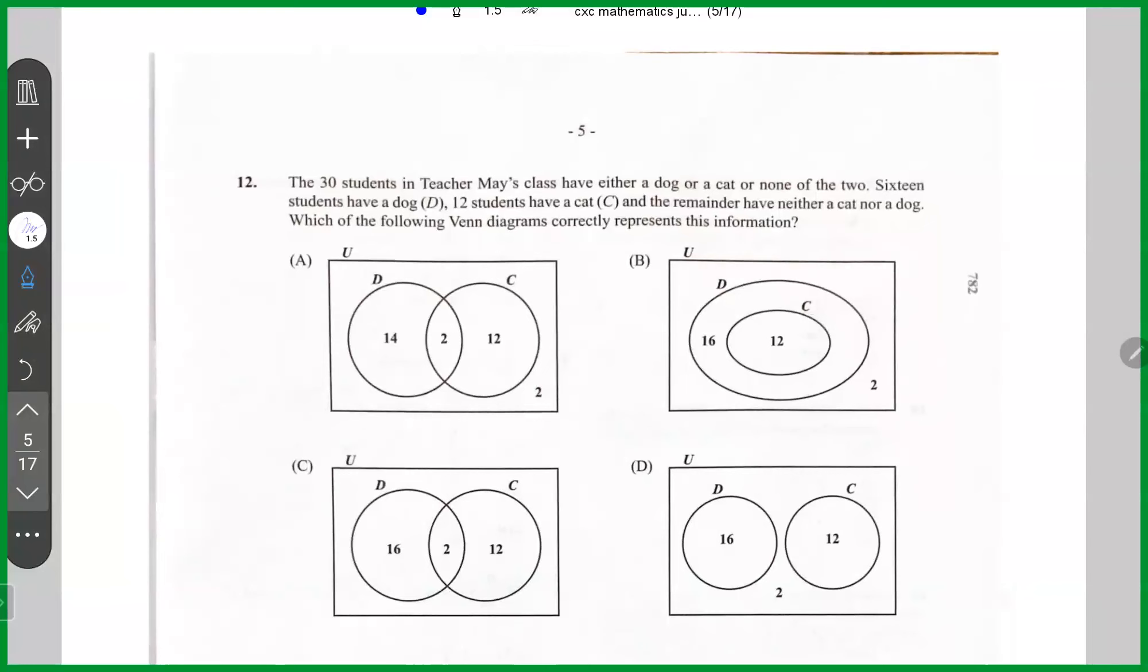Item 12. It says 30 students in Maze class have either a dog, a cat or none of the two. 16 students have a dog, 12 students have a cat. And the remaining students have neither a dog nor a cat, which is the following Venn diagram character represents this information. So 30 students have either a dog or a cat or none of the two.